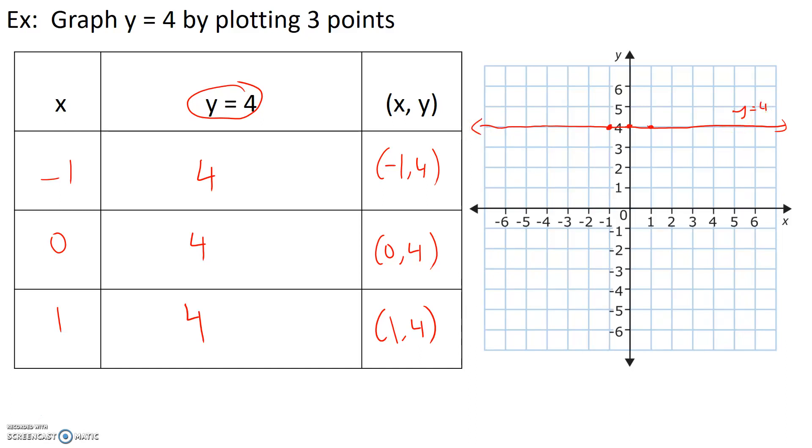Now notice that this line, no matter which point we pick on the line, like let's say we pick this point, this is the point 5, 4. If we pick a point on this side, let's say we pick this point, this is the point negative 3, 4. This line is a collection of all the points that have a y value of positive 4. The x values change, but the y values will stay constant at 4.